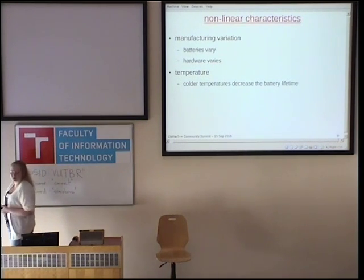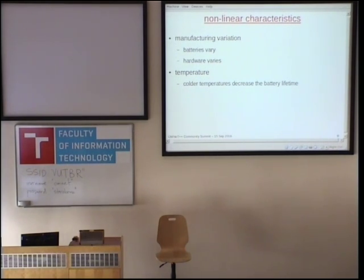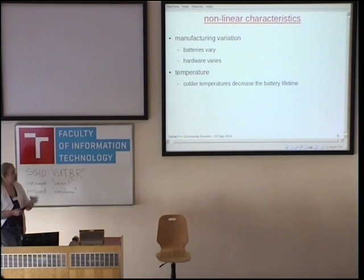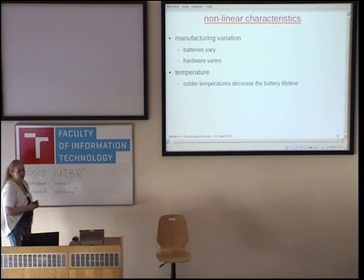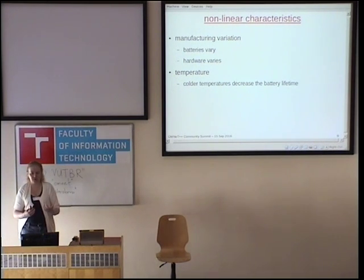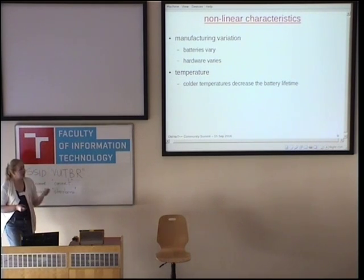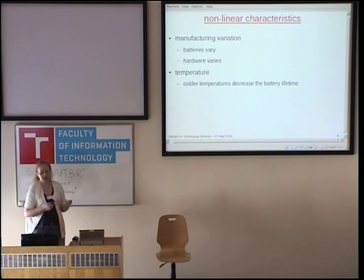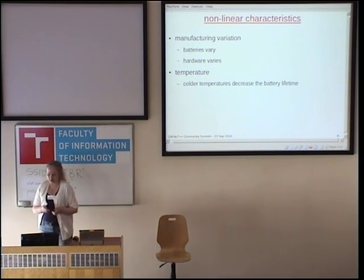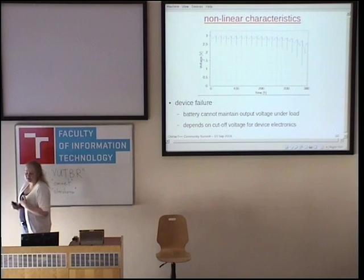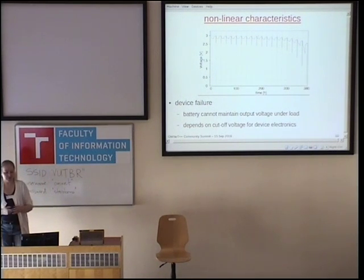A couple of other important nonlinear characteristics. These are cheap batteries, and a lot of the sensor hardware we run them in is cheap hardware, so you get a lot of manufacturing variation. Batteries, even from the same manufacturer and even from the same batch, will show considerable variation in the amount of charge you can extract. Even the hardware varies — sometimes the same operations on nominally identical different devices give different current draws. Another important external factor is temperature: in general, the colder the temperature, the lower the battery lifetime.